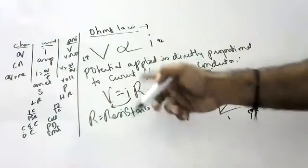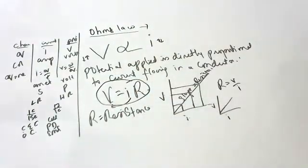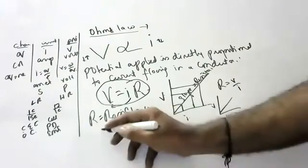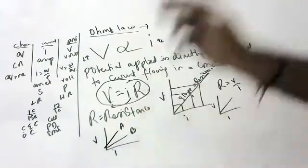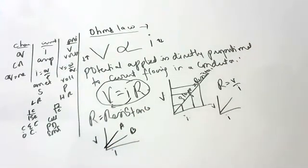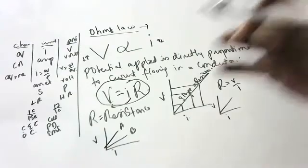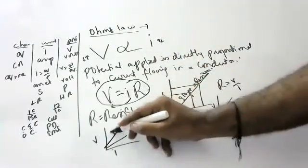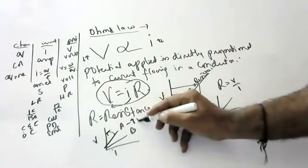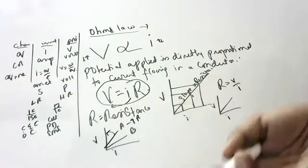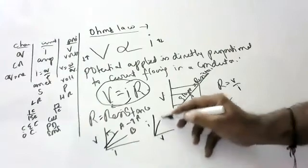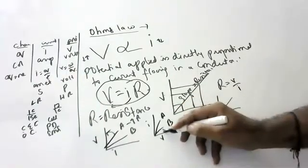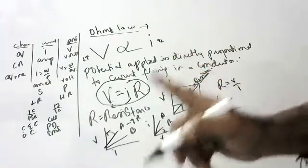A common graph question gives two lines A and B on a V-I graph and asks which has more resistance. Remember: whichever line is closer to the V-axis (y-axis) has more resistance. So if A is closer to the V-axis, A has more resistance than B.